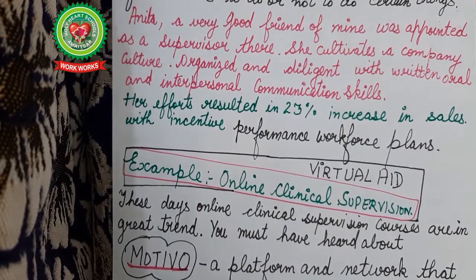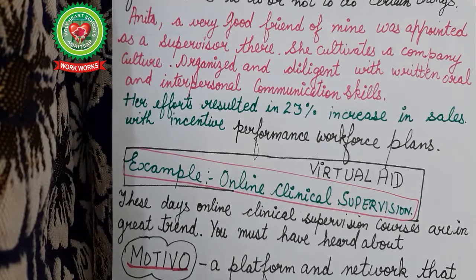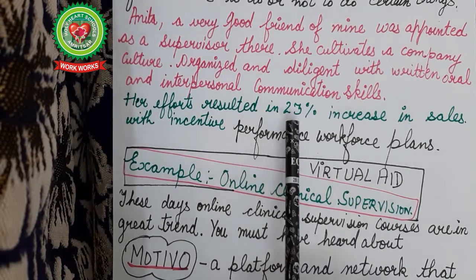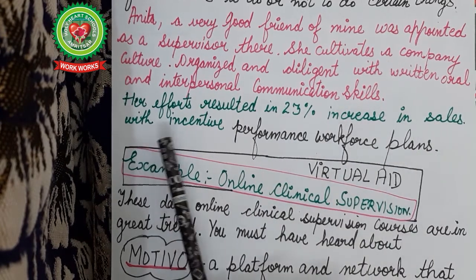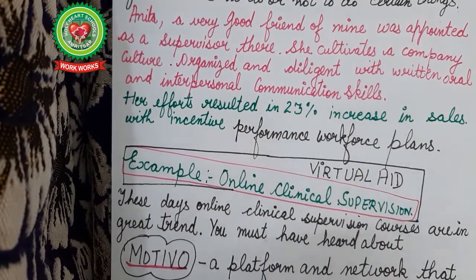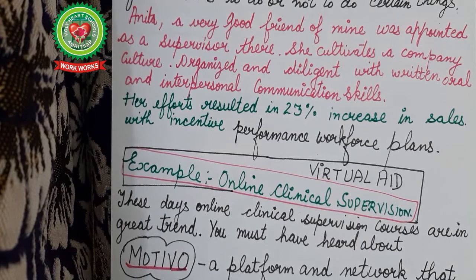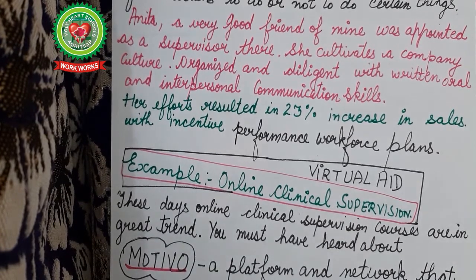Anita worked as a supervisor at D Joria Infotech. Her role was to cultivate the company's culture — to inspire and influence employees so they give their maximum. She organized written and oral communication patterns and created interpersonal communication skills. Her efforts resulted in a 23 percent increase in sales through incentive performance workforce plans, where more work meant more benefits for the workers.